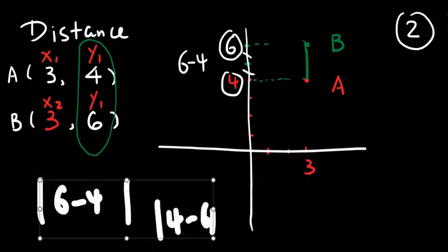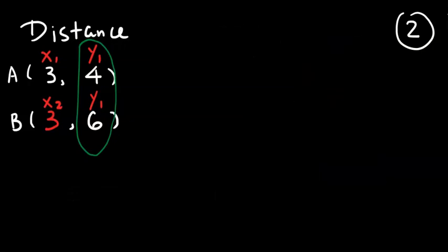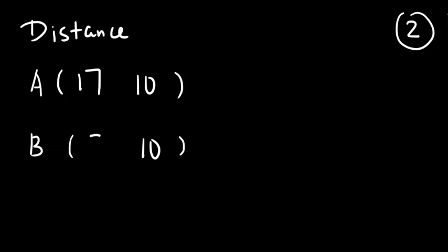Let's do one more. We find a vertical distance. This time we're going to find a horizontal distance. Since we already used these two points several times, we're just going to write a new point. I'm going to say point A, point B, and this is 10, this is 10, this is 17, this is 7.